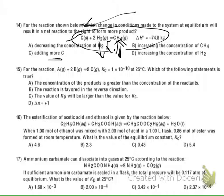Based on Le Chatelier's principle, the system will try to remove the factor you added. Option C is adding more carbon — since it's a solid, it won't affect equilibrium. Option D: increasing the concentration of hydrogen will shift the equilibrium to the right-hand side, producing more methane. So the correct answer is D.